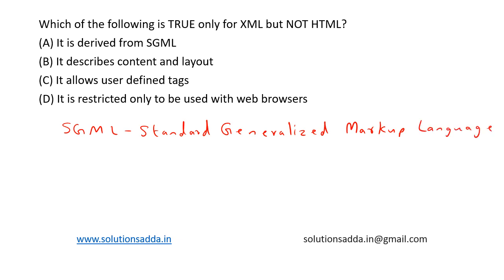SGML is extended to both HTML and XML, so the first option is not correct. Both XML and HTML are used to describe content and layout, so that option is also not correct. Both XML and HTML can be used within web browsers, so that option is also eliminated.